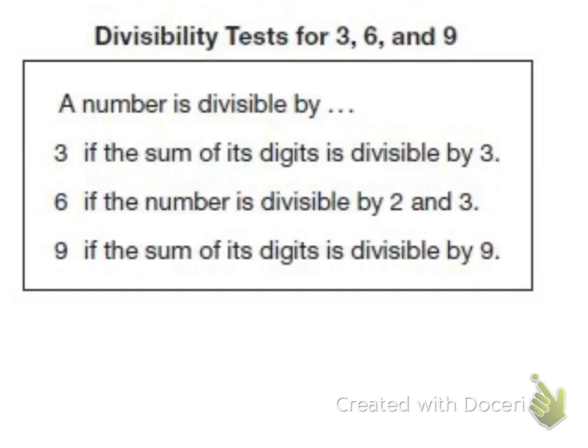We have a couple more rules here. If we want to see if a number is divisible by 3, 6, and 9. If it's divisible by 3, the sum of its digits is divisible by 3. For example, if I have 111 and I add those all together, 1 plus 1 plus 1 equals 3. Well, 3 is divisible by 3, so that means that 111 is divisible by 3.